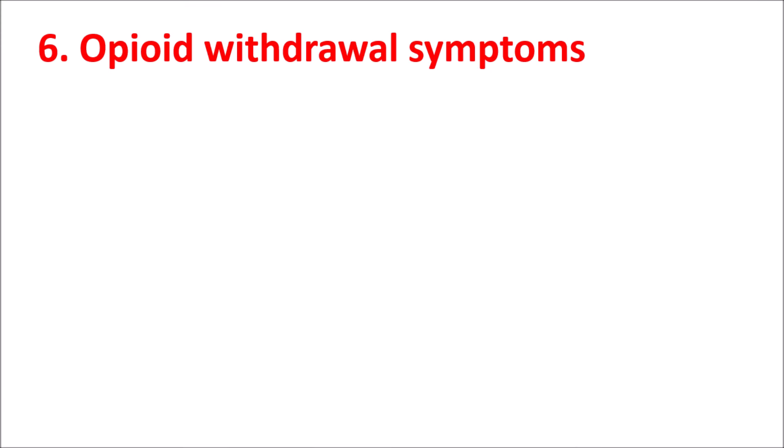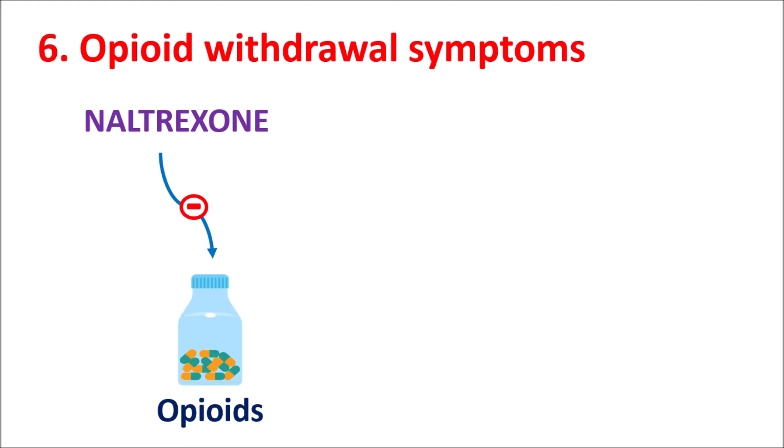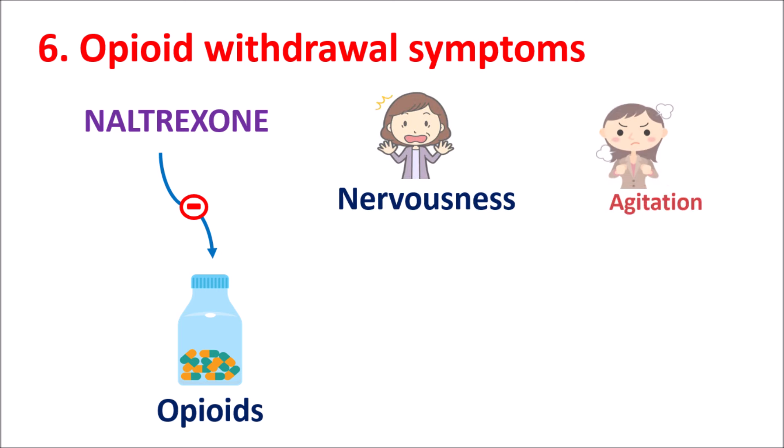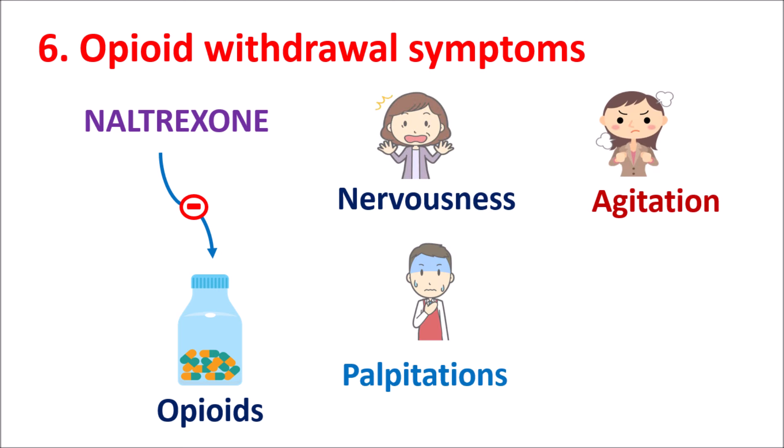The sixth point is opioid withdrawal symptoms. Naltrexone can inhibit opioid activity, and at higher doses, Naltrexone can precipitate opioid withdrawal symptoms. This may lead to development of nervousness, agitation, palpitations, increased heartbeat along with some awareness of heartbeat, and even tremor. These are a few of the opioid withdrawal symptoms that can be observed with a higher dose of Naltrexone.